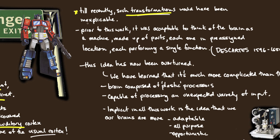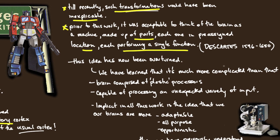These transformations were inexplicable up until recently. Prior to this work, it was acceptable to think of the brain as a machine made up of parts, each in a pre-assigned location performing a single function. We have Descartes to thank for this mechanistic view of the brain.